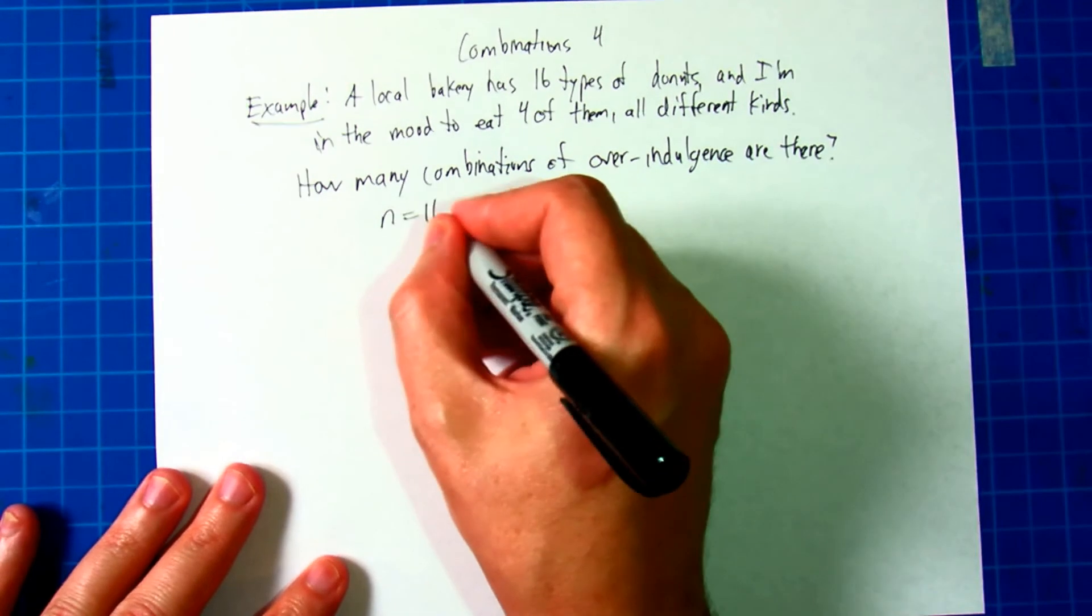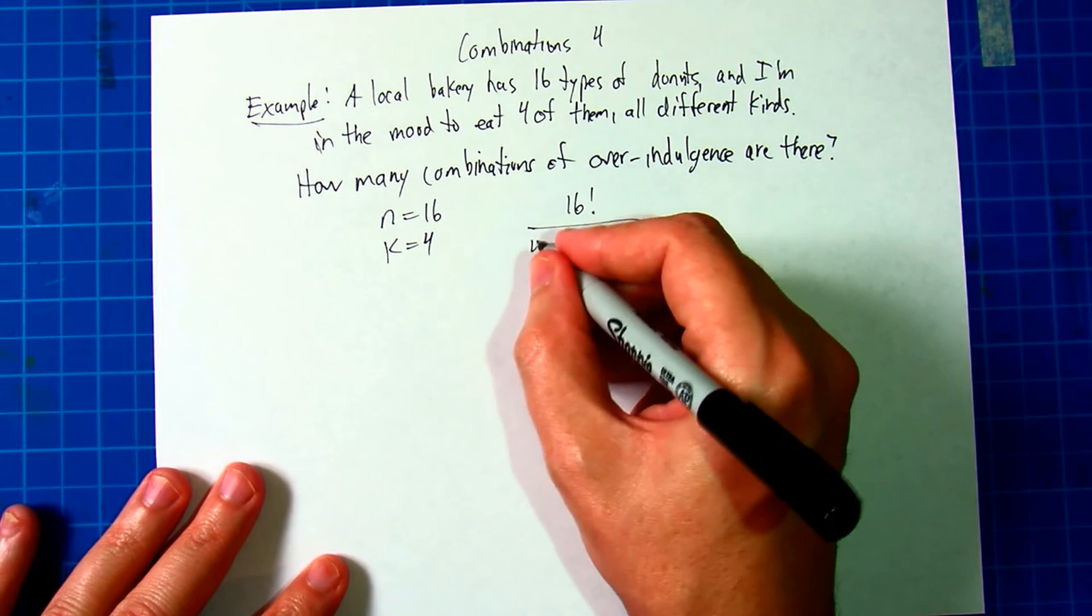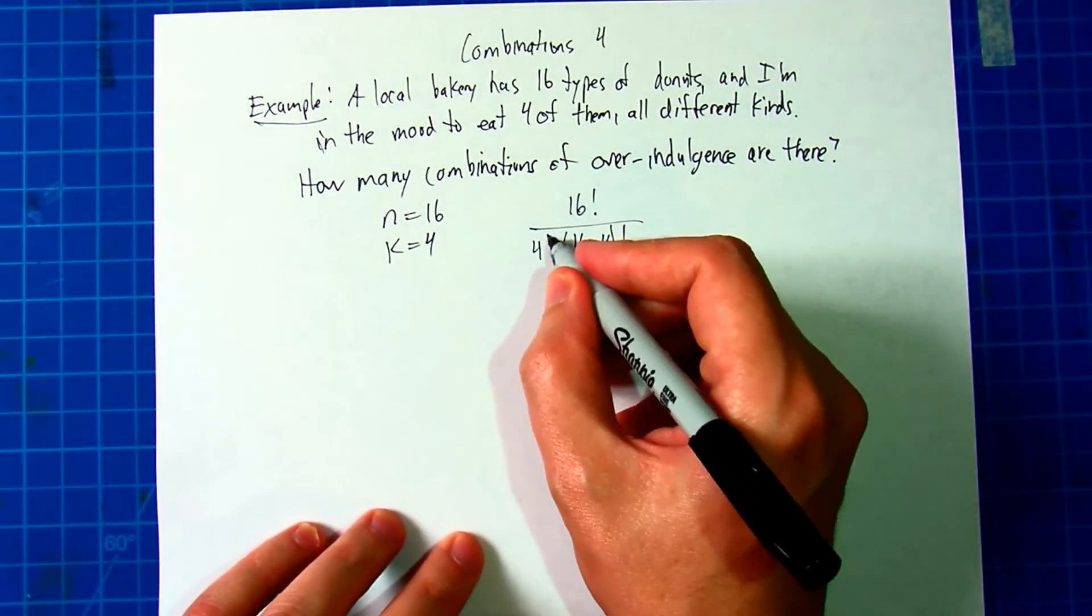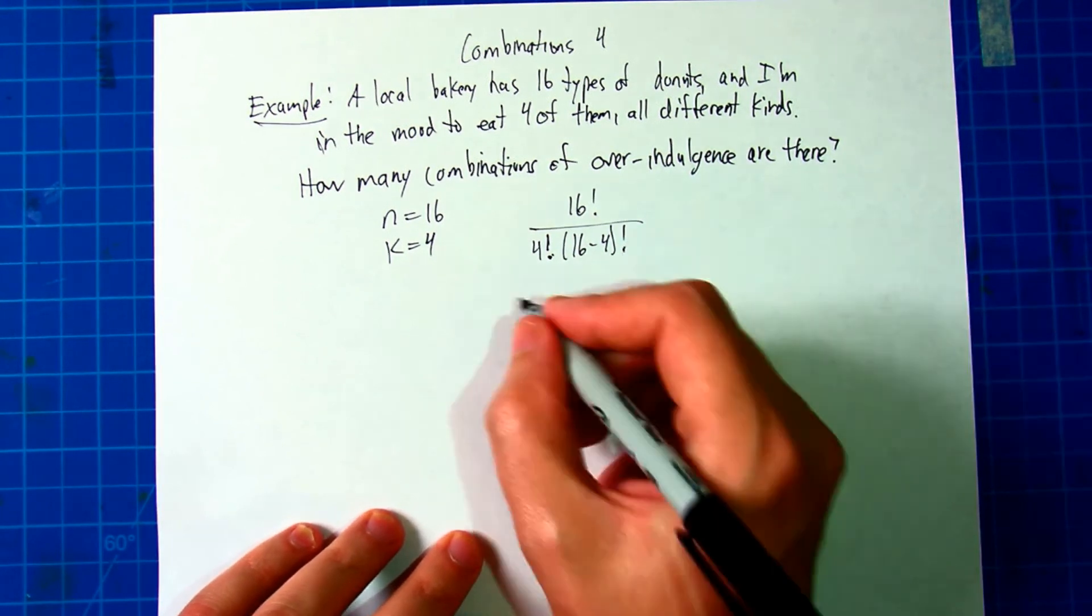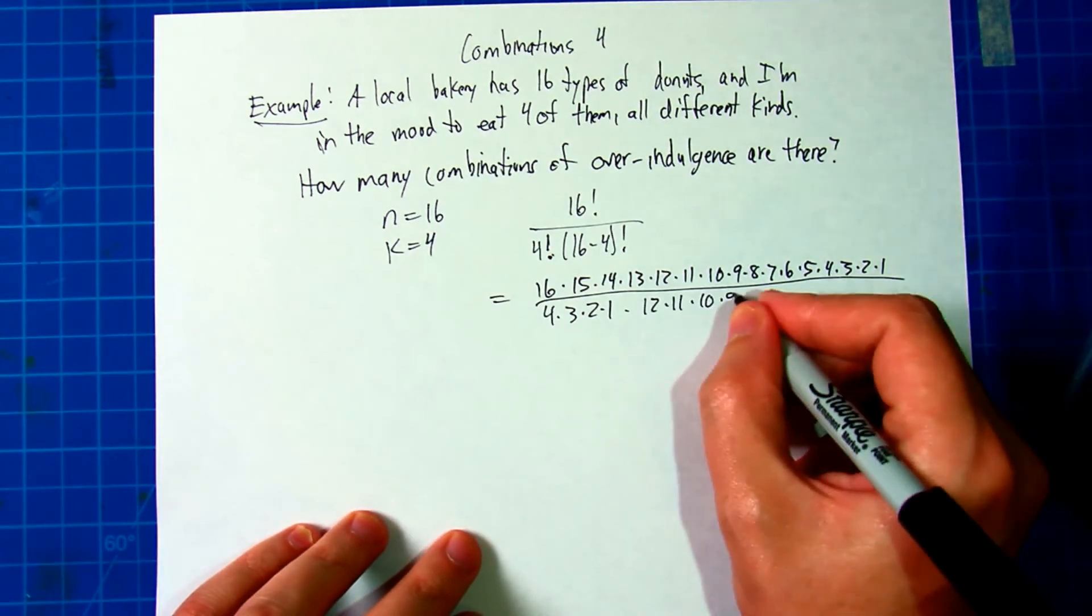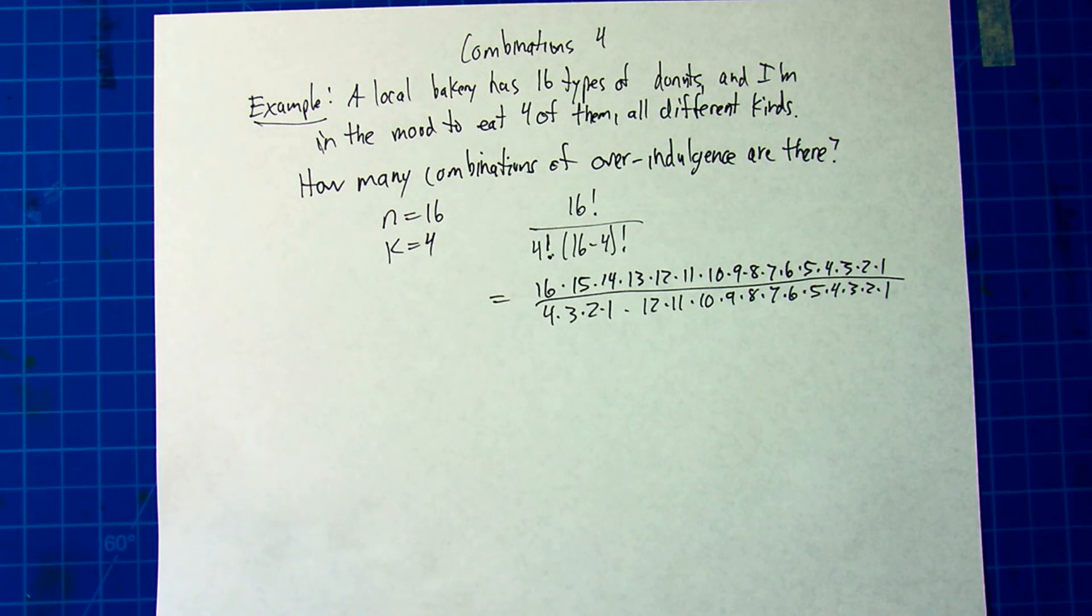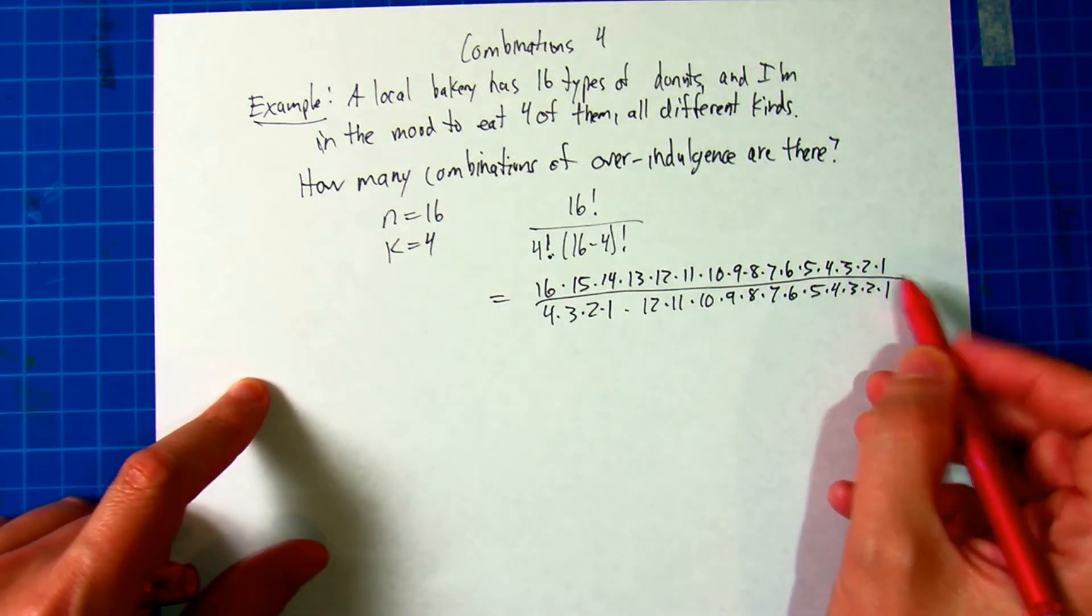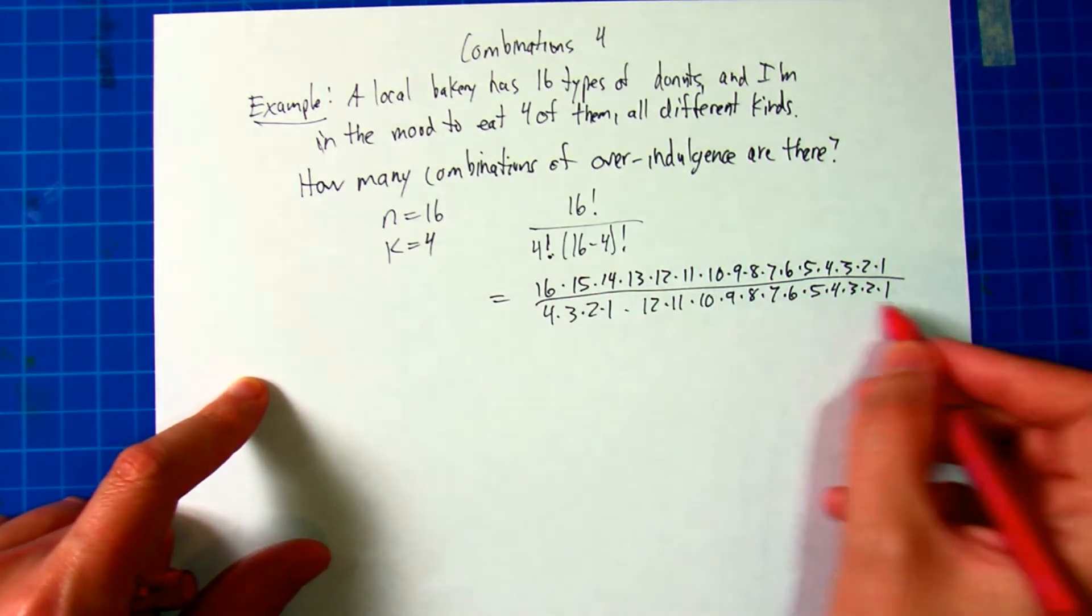N equals 16, K equals 4, so put this in the formula, you have 16 factorial over 4 factorial 16 minus 4 factorial. Remember that this is factorial of K, this you have to do the subtraction before that. So you get 16 times 15 times 14 times 13 times 12 times 11. At this point, if you don't have a computer program to help you work this out, just notice that if you expand the 16 factorial all the way out, and you expand the 4 factorial out, and you expand the 12 factorial all the way out, you're going to be able to cancel some things.